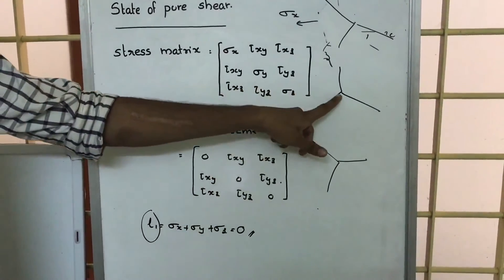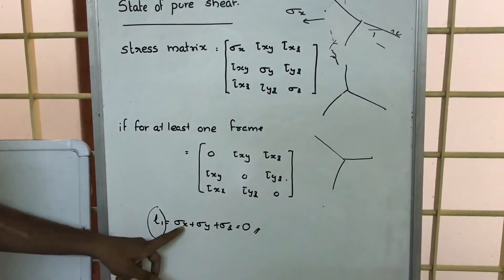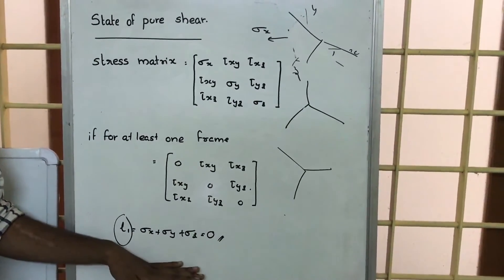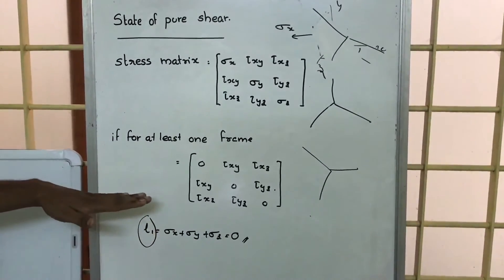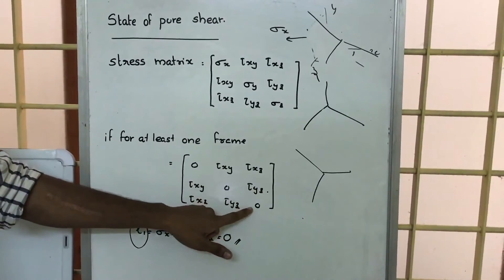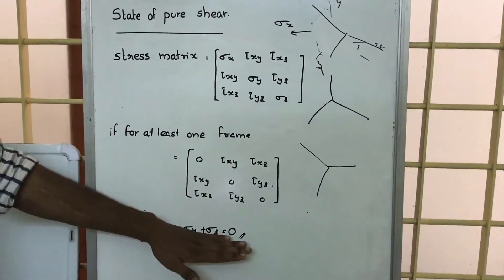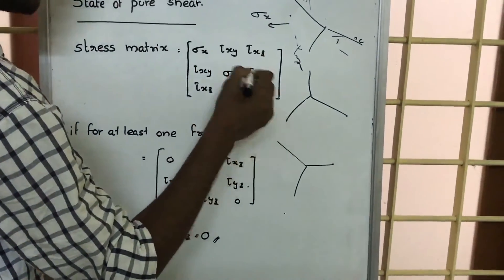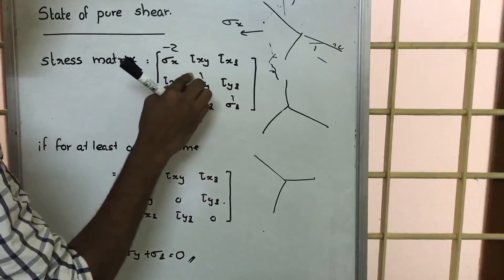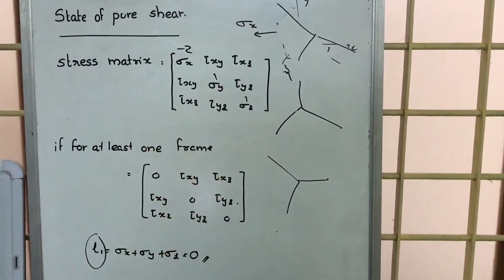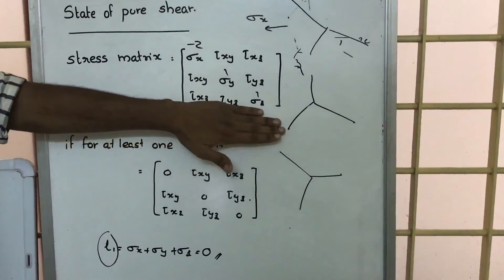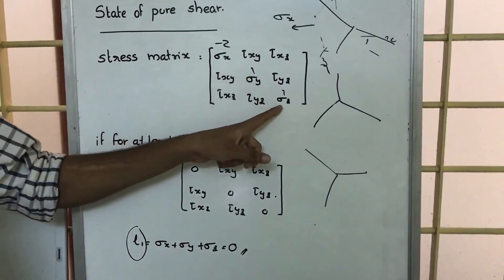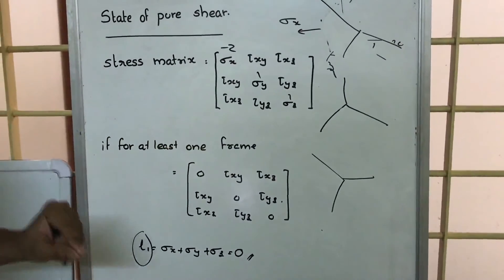Whether we take this coordinate system or a rotated one, for the given point the sum sigma x plus sigma y plus sigma z will be the same. So if pure shear occurs, for that particular matrix the sum of sigma x, sigma y, sigma z will be zero. Since this sum is invariant, even if the matrix changes, the sum remains zero. So if a stress matrix is given and we have to identify whether a state of pure shear occurs, we simply add the diagonal elements — if their sum is zero, a state of pure shear occurs.